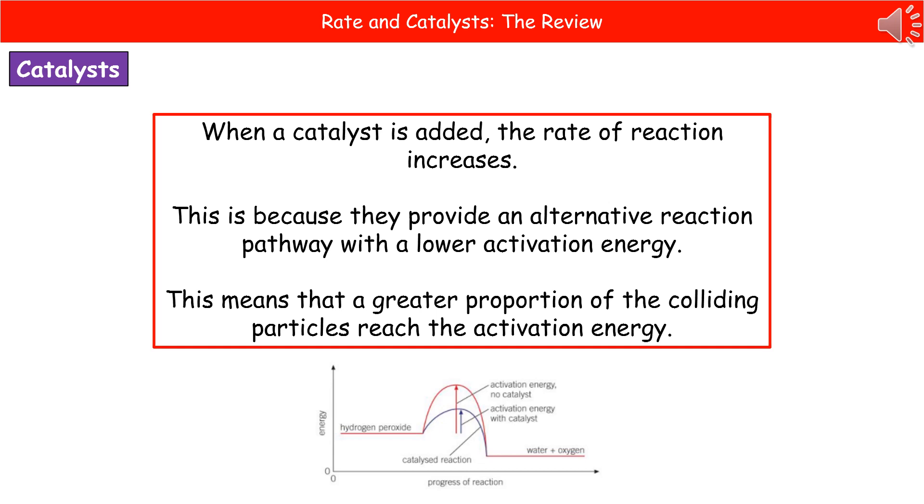At the bottom there, we've got one of those energy profile diagrams that shows you the difference here. The pink line or the red line is the one that's got no catalyst, so you can see there is a much larger activation energy, which means that a fair number of the particles that collide may not reach that point and therefore no reaction occurs.